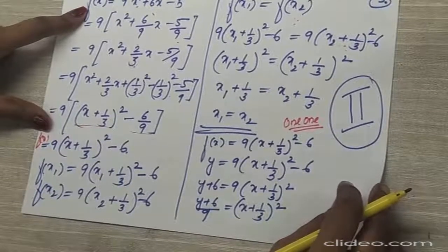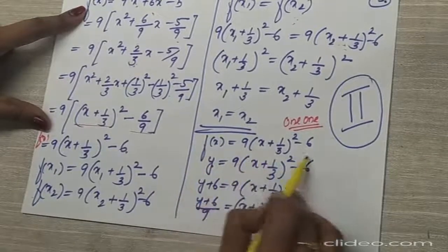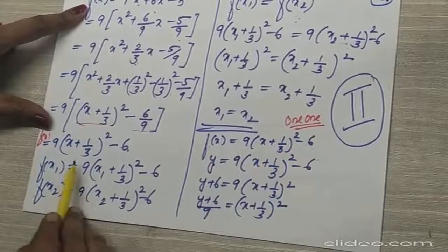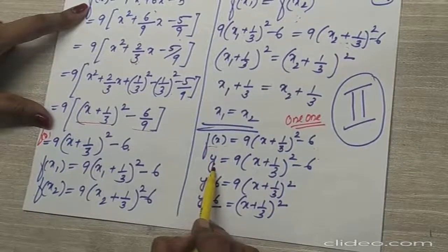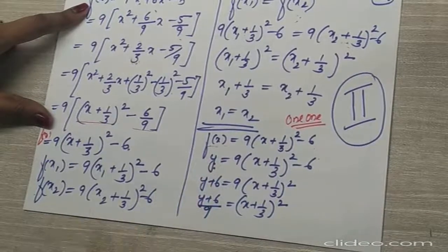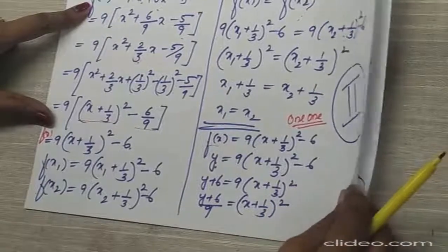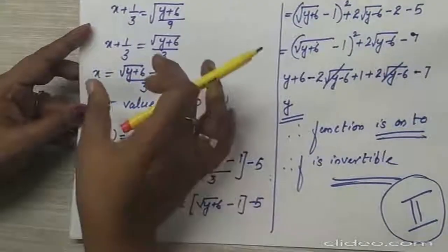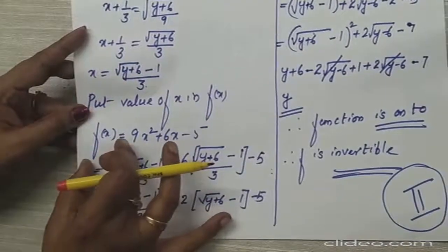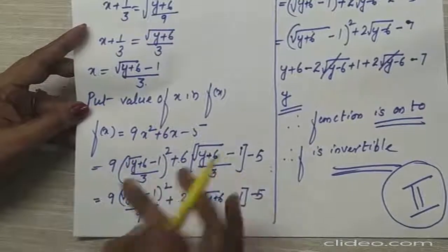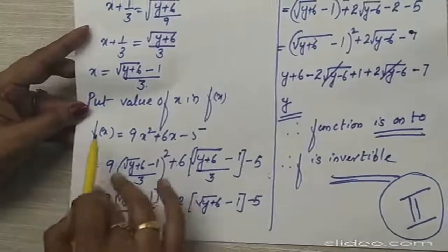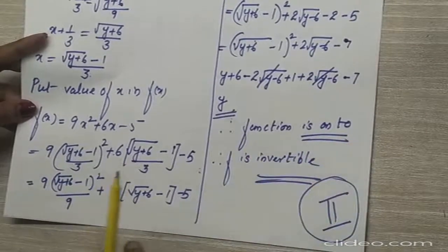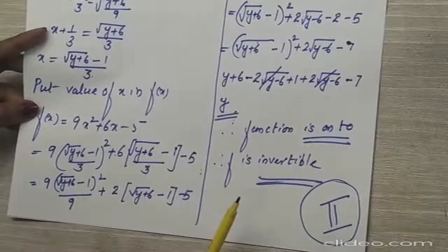For showing onto, the procedure is the same as before. Assume f(x) = y, where f(x) = 9(x + 1/3)² - 6. Find the value of x — you get x = (√(y + 6) - 1) / 3. Substituting back into f(x), you show f(x) = y, proving it is onto. Since f is one-one and onto, it is invertible.